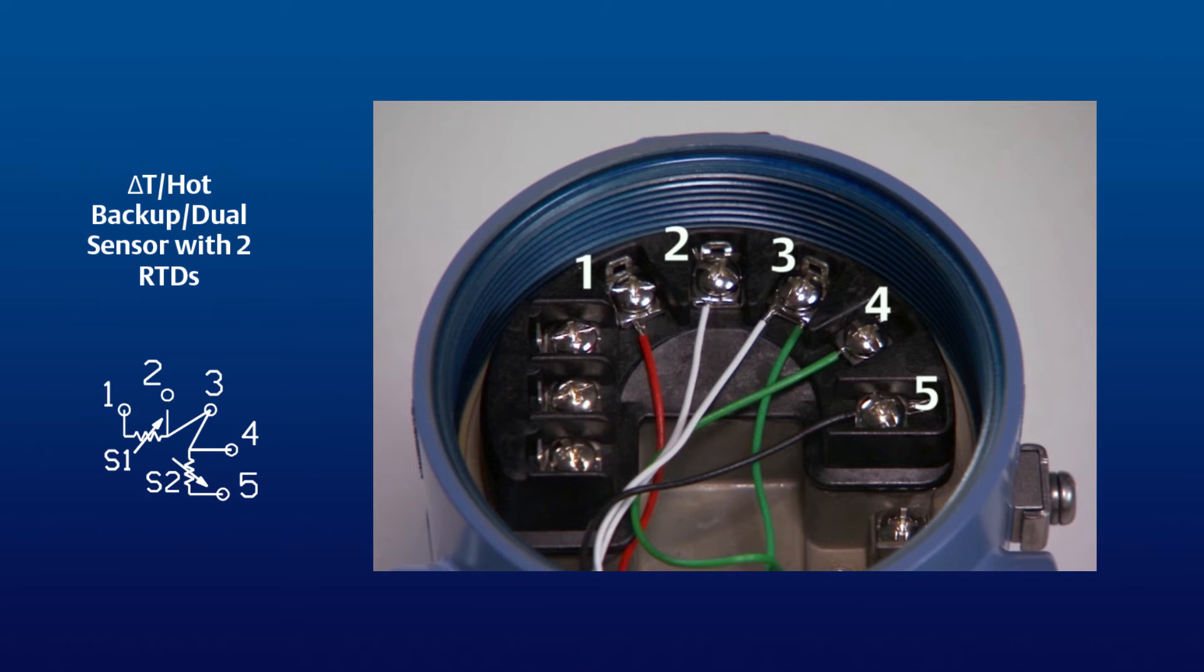Then for the second RTD, the two green wires are connected to terminals 3 and 4, with the single black wire connected to terminal 5. Note that there are two wires attached to terminal 3.